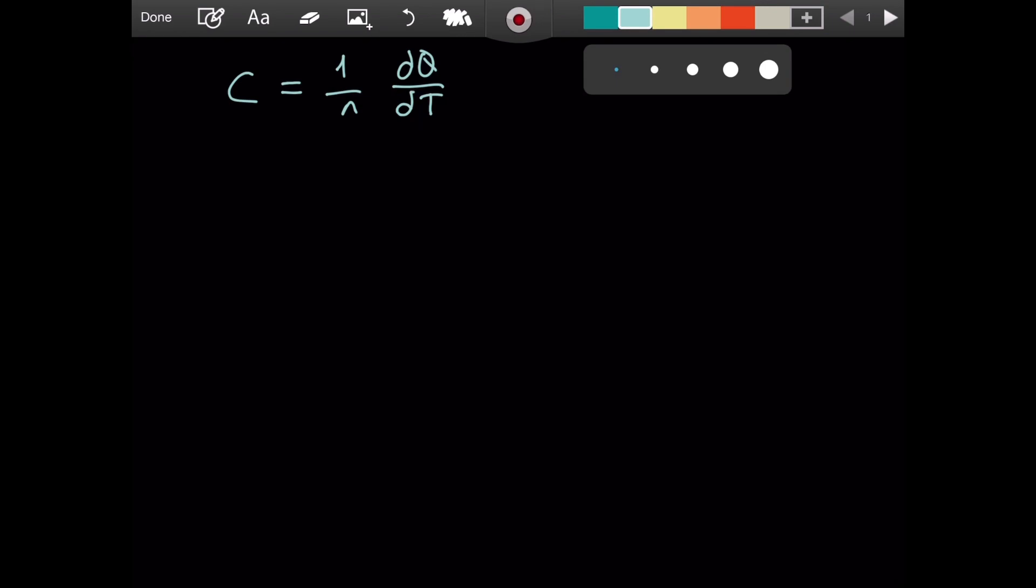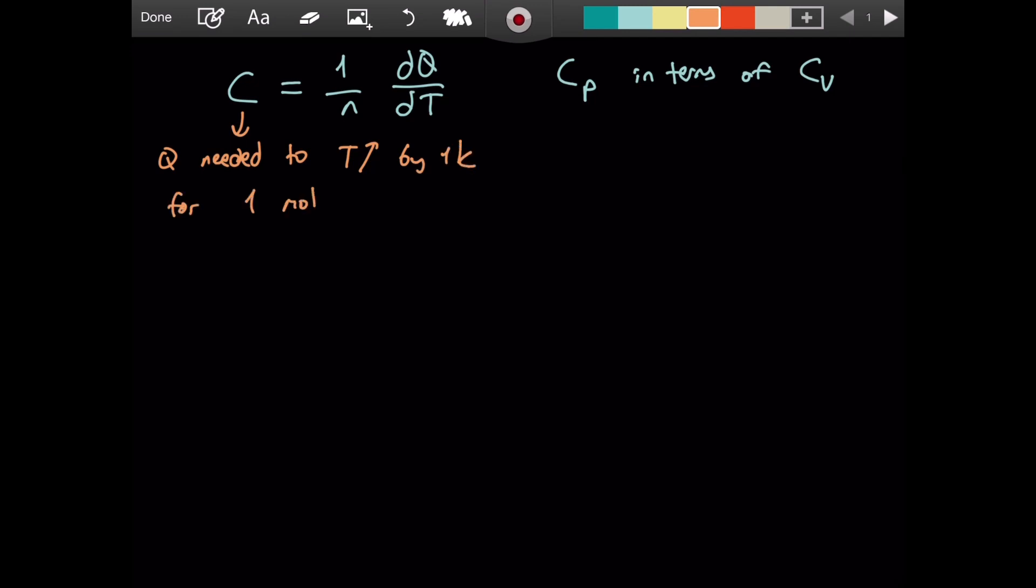And ultimately, in this video, we want to express Cp in terms of Cv and other constants. Now, what are these even standing for? What is Cp, what is Cv, and what is C physically? Let me define each one for you. So C is basically the heat required, the Q needed to increase the temperature by one kelvin for one mole of gas.